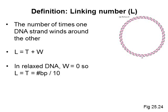So, suppose this DNA contained 400 base pairs. The twist is therefore 400 divided by 10, or 40, and because writhe is zero, the linking number also equals 40.